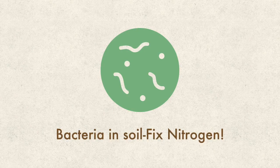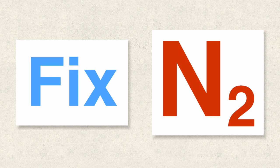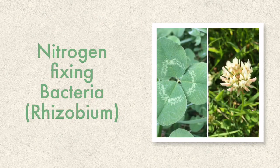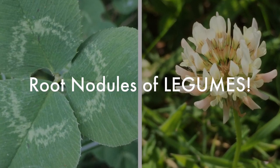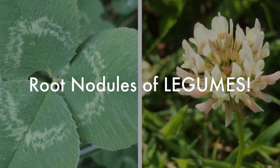Bacteria are the only microorganisms in the soil capable of fixing atmospheric nitrogen. For your examinations, you have to know about two groups of bacteria involved in nitrogen fixation. The first are those bacteria associated with legumes — plants such as clover and soya beans. They are a special type of bacteria known as rhizobium, found in the root nodules of legumes.